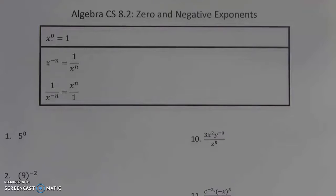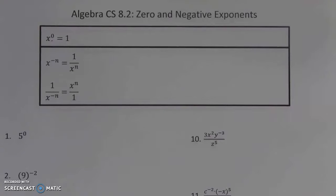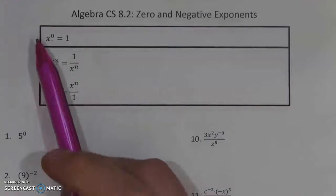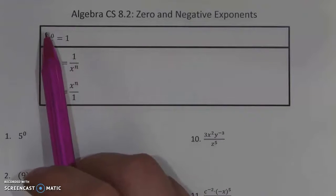Hello everyone. We are going to be continuing our talk about exponents today with two new rules: what do we do when we have zeros in exponents, and what do we do when we have negative exponents? What do they mean? Let's take a look first at our easier rule, and that is zero as an exponent.